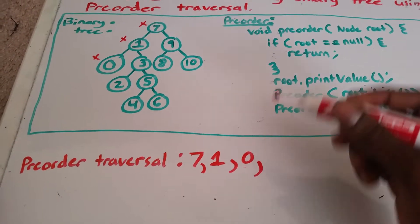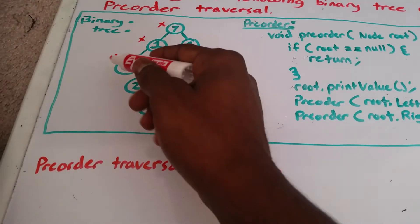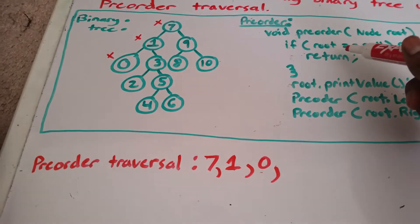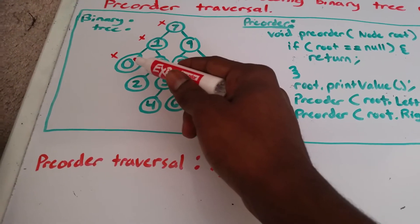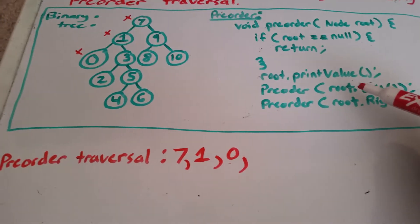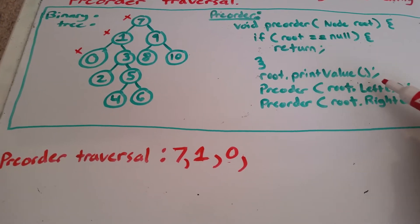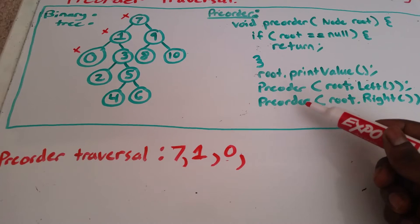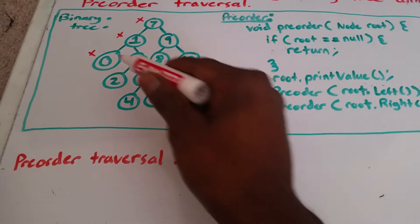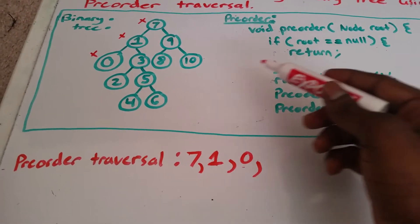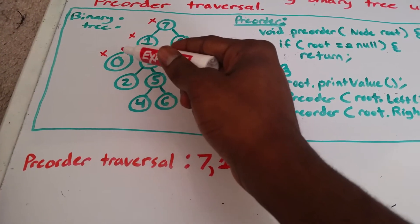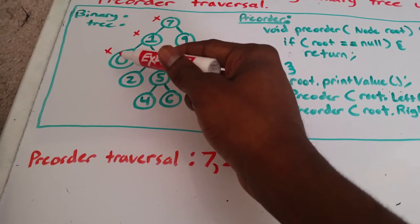Okay, and now we're going to go left of 0, and there's nothing there. So we return back to 0, and we start off again where we were at before, which was left, and then we need to go right. So we go to the right of 0, and there's nothing to the right of 0. So we go back and we return to 0. We're done with 0.